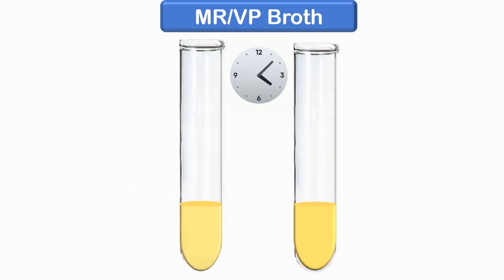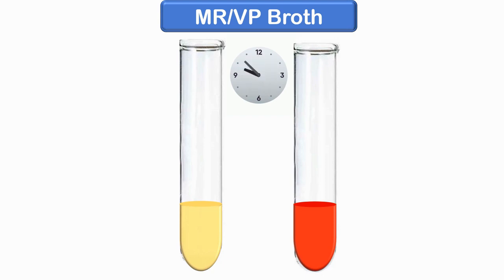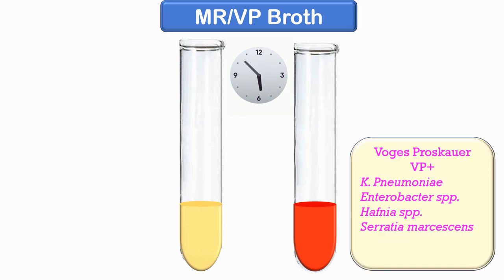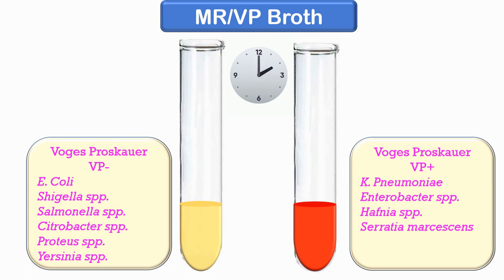Development of red color indicates a positive VP test; no color change indicates a negative test. Usually, organisms that are MR positive are VP negative and vice versa, because of the different metabolic pathways used to utilize glucose. Therefore, these tests are done in conjunction with each other. Some examples of VP positive and negative tests are given.